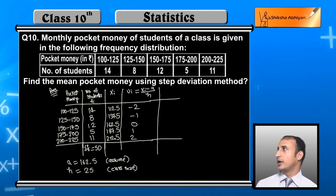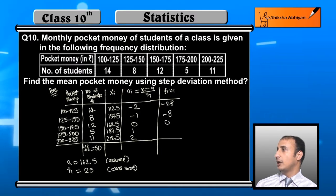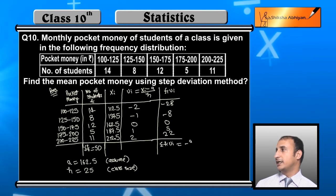For fi ui we multiply frequency by ui. First is 14 into minus 2 is minus 28, 8 into minus 1 is minus 8, 12 into 0 is 0, 5 into 1 is 5, and 11 into 2 is 22. So sigma fi ui when we sum is minus 9.